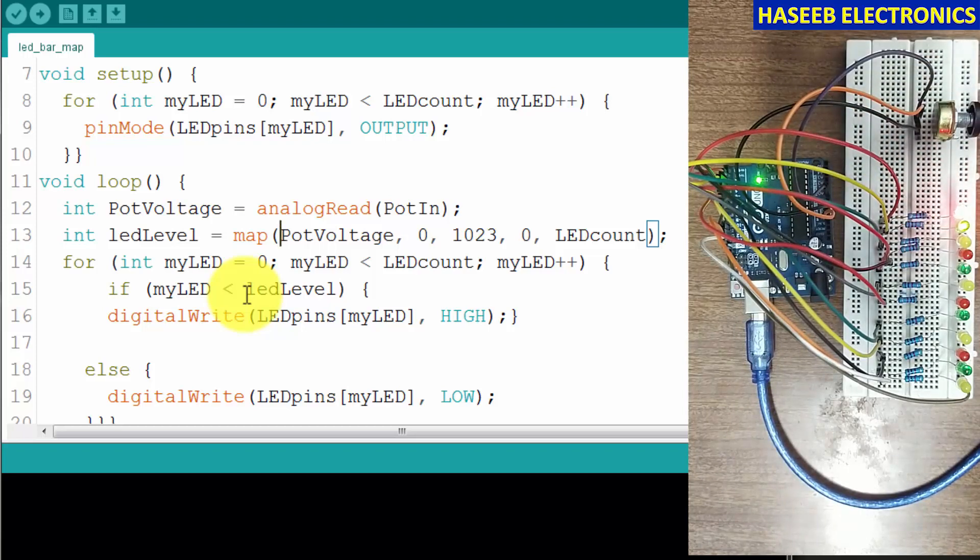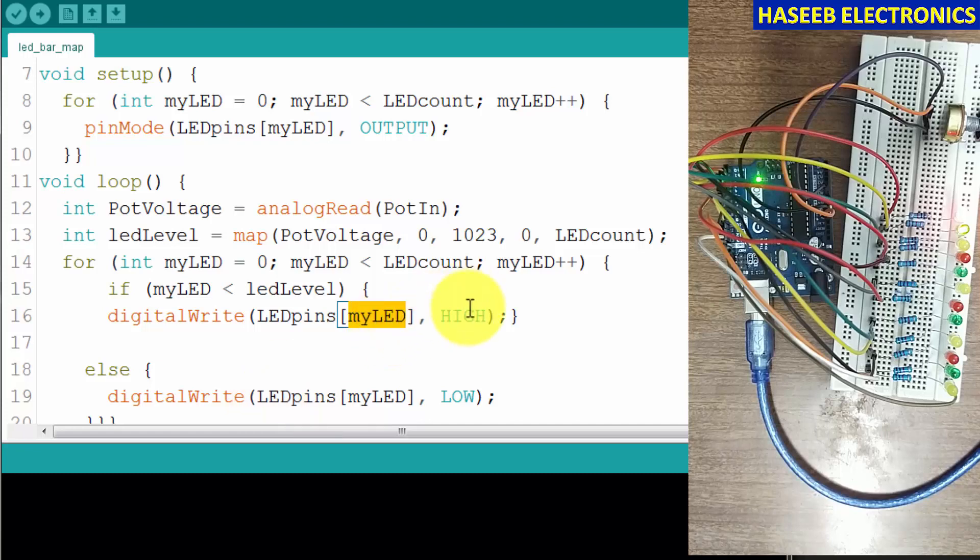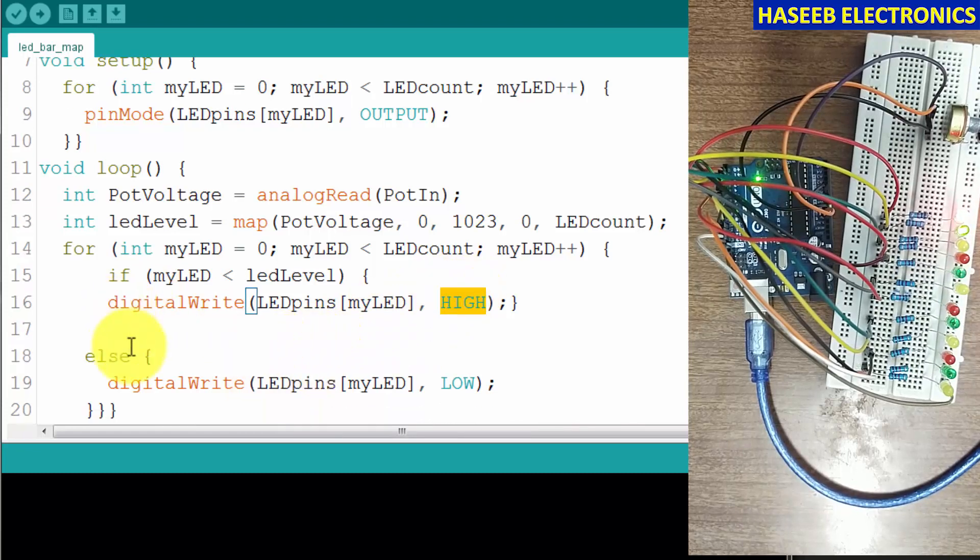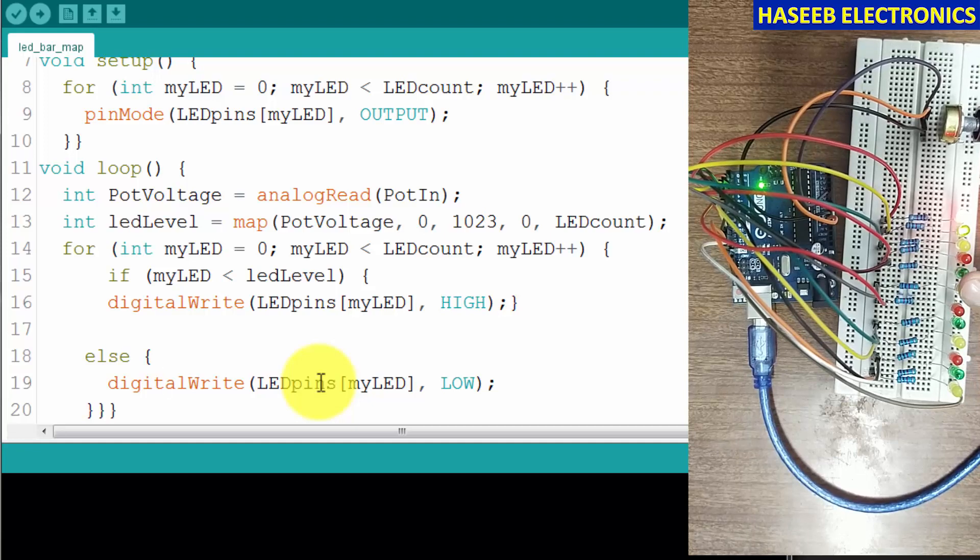It will decide and allocate the level for each LED at which level, at which number the ADC will count. The analog to digital converter gives output and the processor will define which value is allocated. For example, if the last number is 554 and this is for 554, it will turn on the lower numbers and higher numbers will remain off. In the same condition, if the level is greater than ledLevel, digitalWrite LEDpins - from this array what is myLED number, present position - it will turn on HIGH. Otherwise, if the condition is not true, it will say digitalWrite - if the level is less than that LED level, it will turn off the LEDs.